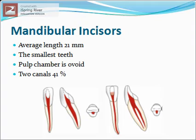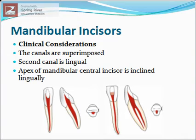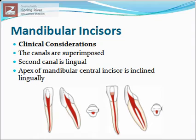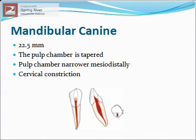Mandibular incisors are the smallest teeth in the arch and the cross section of the pulp chamber is ovoid in shape. The incidence of two canals can be as high as 41 percent; the canal is flat and narrow mesiodistally and wide buccolingually. Clinical considerations: it's common to miss the presence of the second canal on the preoperative radiograph if the canals are superimposed. The second canal is usually found lingual to the main canal. Since the apex of the mandibular central incisor is inclined lingually, surgical access may become difficult to achieve.